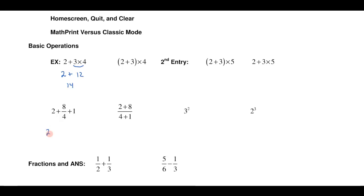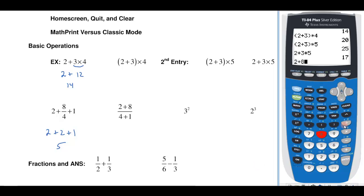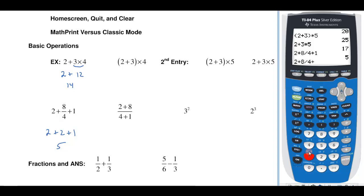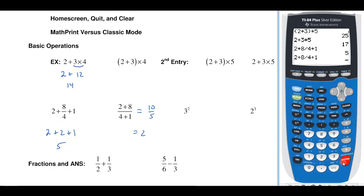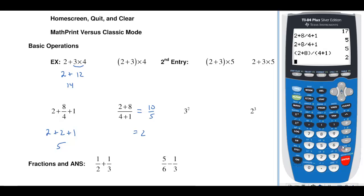Let's do one more: 2 plus 8 over 4 plus 1. We know that's going to give me 5. If I hit 2 plus 8 divided by 4 plus 1, I think of the 8 fourths as 8 divided by 4. That will give me the correct answer. But notice if I have 2 plus 8 over 4 plus 1 as a single fraction, I'm not going to want to enter it as 2 plus 8 divided by 4 plus 1 — that gives me 5, when the answer should be 10 over 5, which is 2. So if I have fractions with several operations, I'm going to have to use parentheses: a parenthesis for the numerator, 2 plus 8, divided by the quantity 4 plus 1, and that gives me what I want.